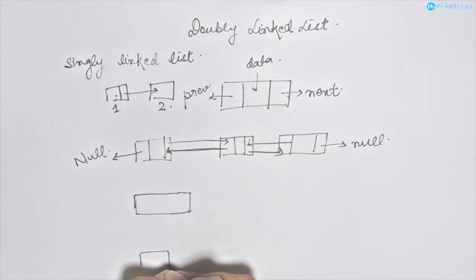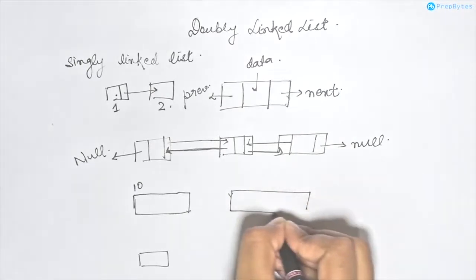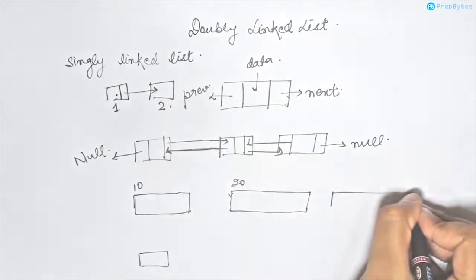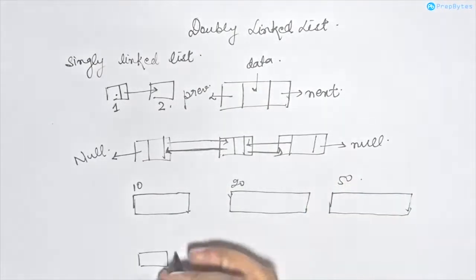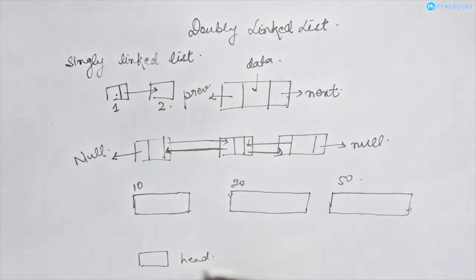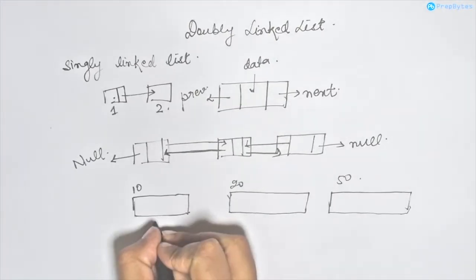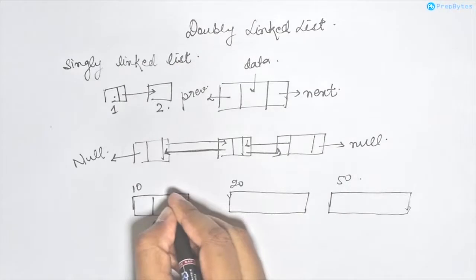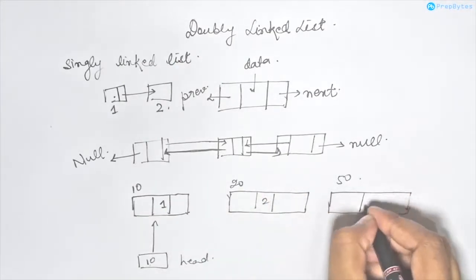So let's say we have the head node at address 10, another node at address 20, and another node at address 50. This head pointer is pointing to the first node and it has address 10. Let's say the data stored in each of these nodes is 1, 2, and 3.